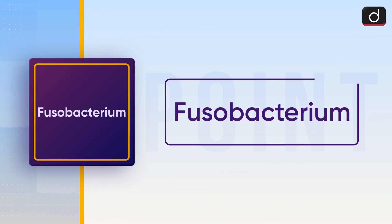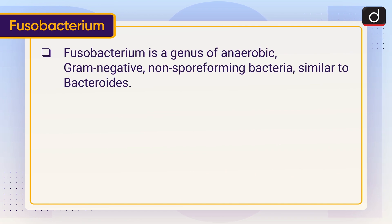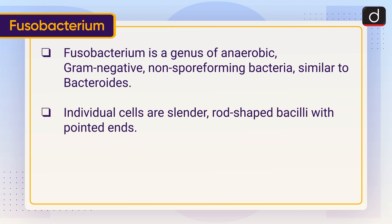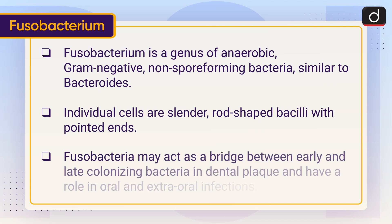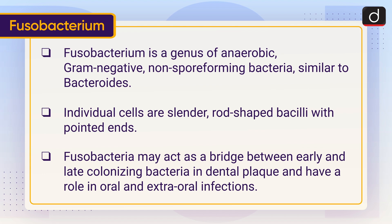Now let's discuss about Fusobacterium. Fusobacterium is a genus of anaerobic gram-negative non-spore-forming bacteria, similar to bacteroids. Individual cells are slender rod-shaped bacilli with pointed ends. Fusobacteria may act as a bridge between early and late colonizing bacteria in dental plaque, and have a role in oral and extra-oral infections.